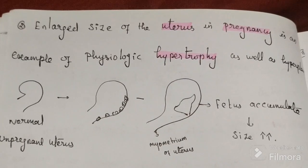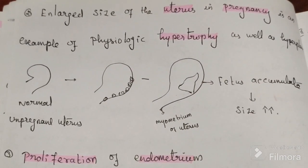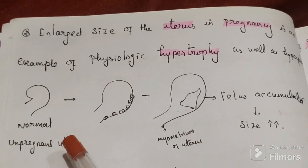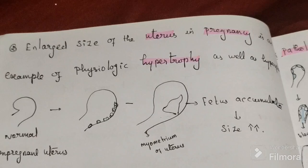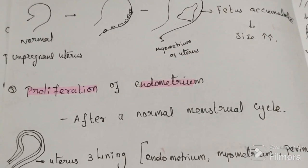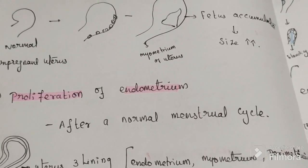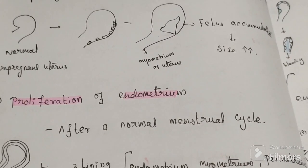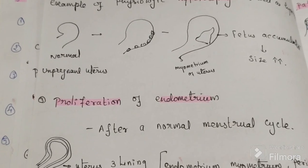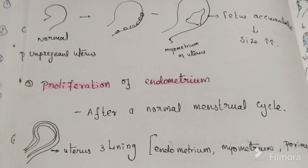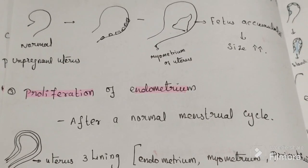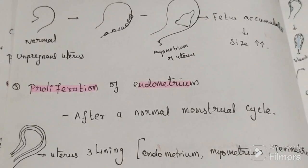The pregnant uterus is an example of physiological hypertrophy as well as hyperplasia. The uterus increases in size because the cells of the myometrium undergo both hypertrophy and hyperplasia — so both cell size and number increase. Therefore, it is an example of both hypertrophy and hyperplasia.